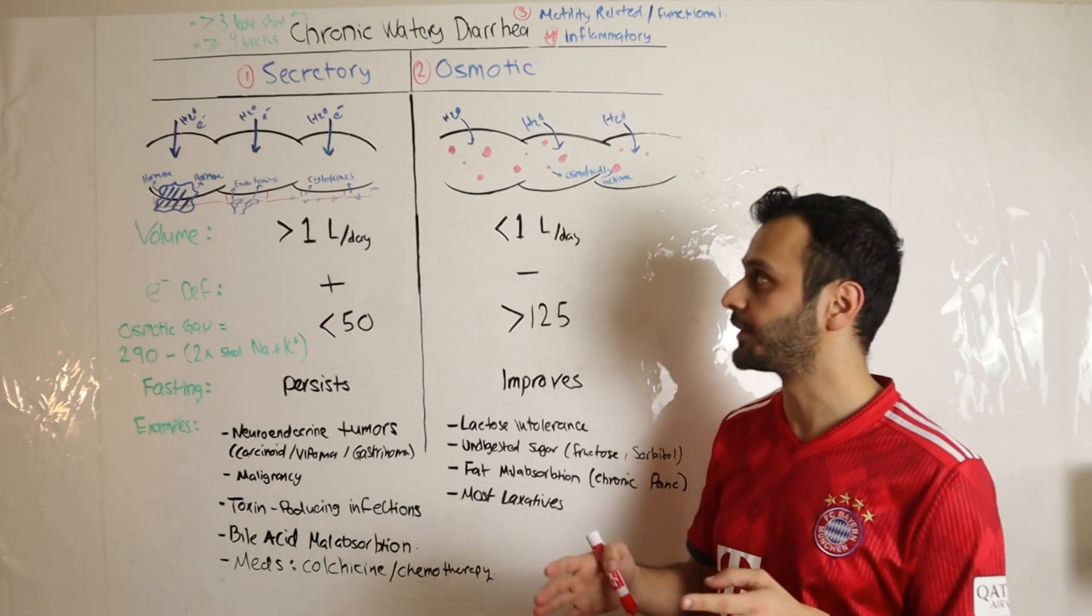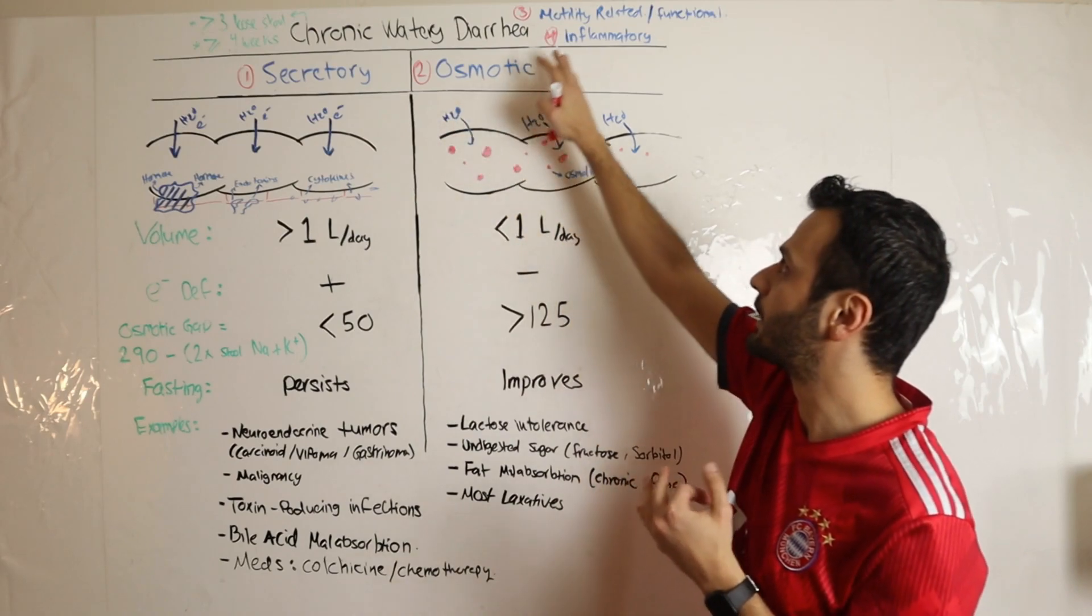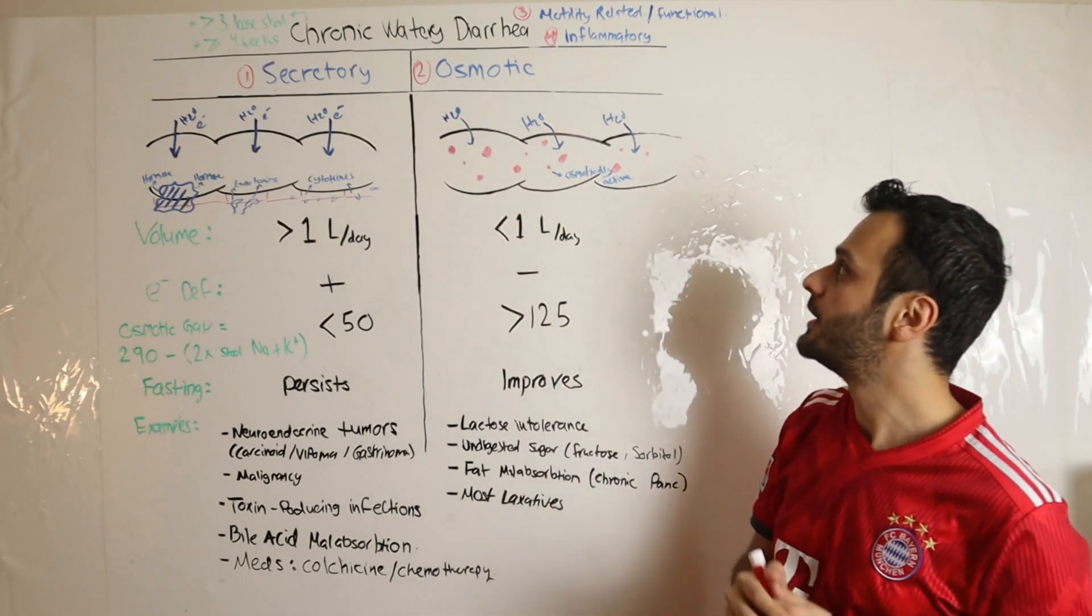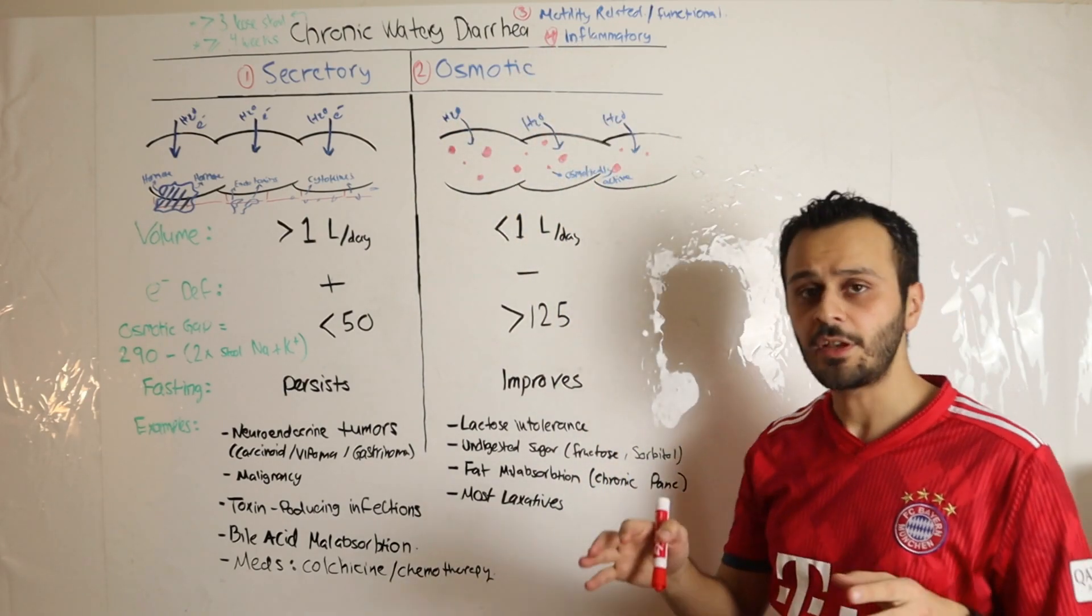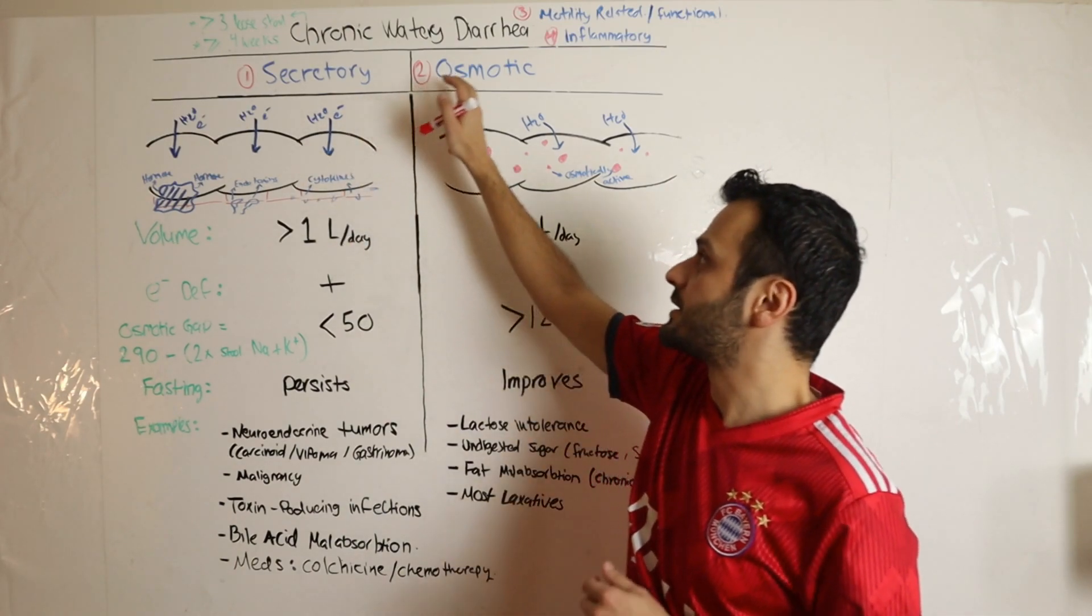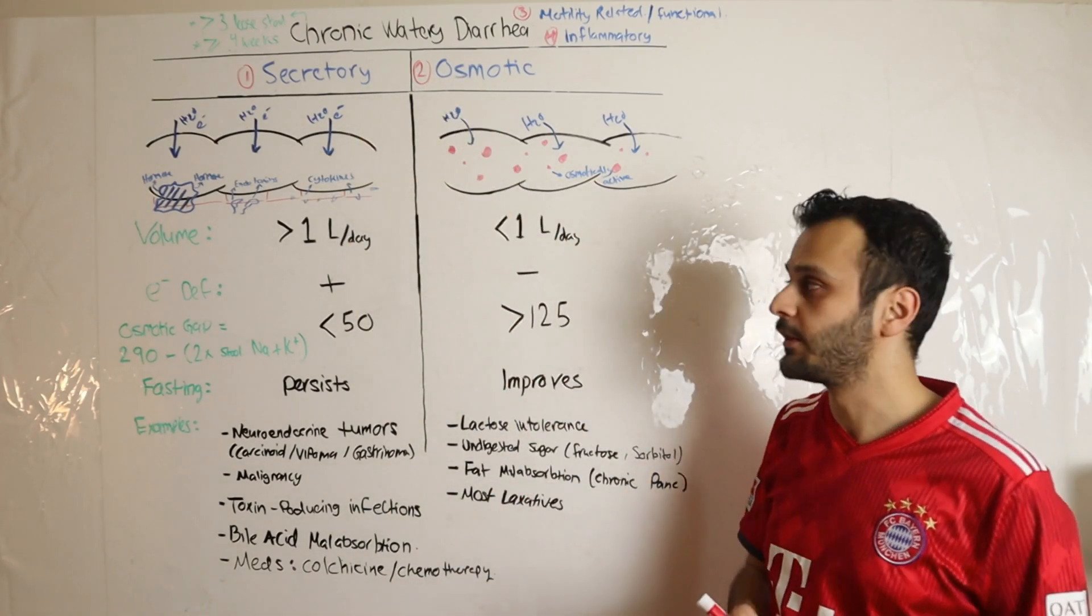Chronic watery diarrhea can be divided into four different categories: secretory, osmotic, motility-related, and inflammatory. In today's video we're going to focus on secretory and osmotic diarrhea and the difference between those two, because this is a very high yield topic.